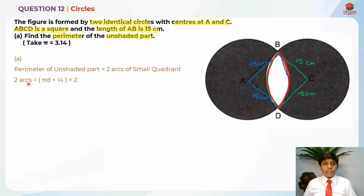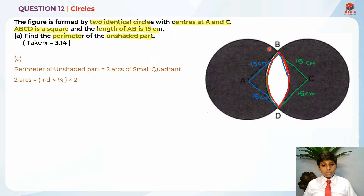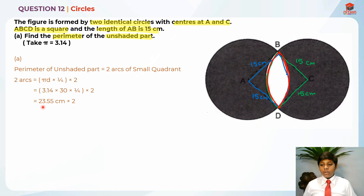In order to find two arcs, we need to take π×d — which is the formula for perimeter — times one quarter because of the quarter circle, or quadrant, times one quarter, then times two because there's two of them. So it's basically 3.14 times 30. So 30 is the diameter — if you add 15 and 15, 30 is the diameter — times one quarter times two, which gives us 23.55 cm times two, which is 47.10 cm. So this is the answer for Part A.